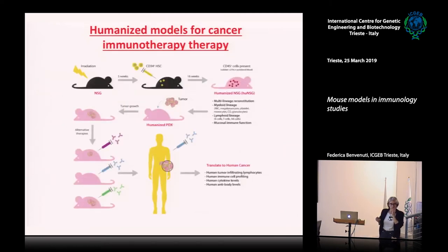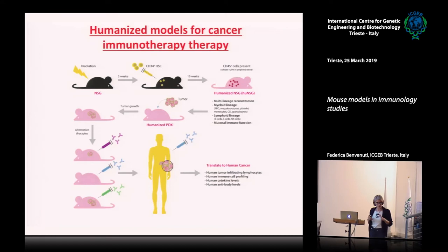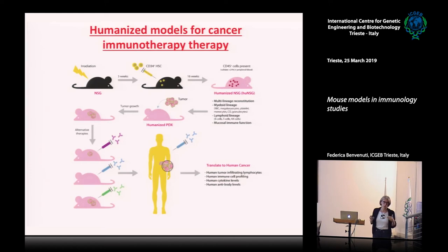A question arose about graft-versus-host disease when transplanting human cells into immunosuppressed mice. This has been minimized by optimizing models to reduce host-versus-graft disease while favoring development of all immune subsets. The mouse immune system is largely ablated in these recipients, and there are often deletions in MHC class 1 and 2 to avoid rejection of engrafted human cells.